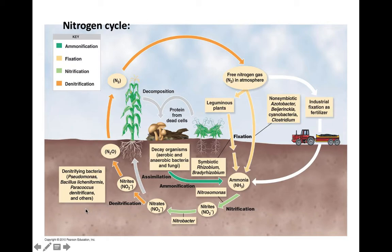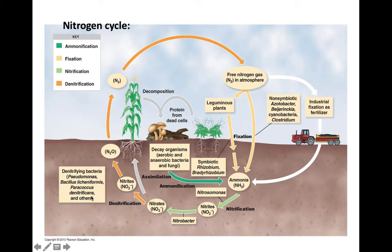One thing we could do as farmers is try not to overwater our fields. When water saturates soil, oxygen does not diffuse well through water. So if you over-irrigate your soil, you can create an anaerobic environment, which would trigger the soil bacteria to switch to anaerobic respiration and denitrification. Something a farmer wouldn't have control over is heavy rainstorms, which would also trigger anaerobic respiration. So as farmers, we feel nitrogen fixation and nitrification are beneficial, and we don't want denitrification to occur.